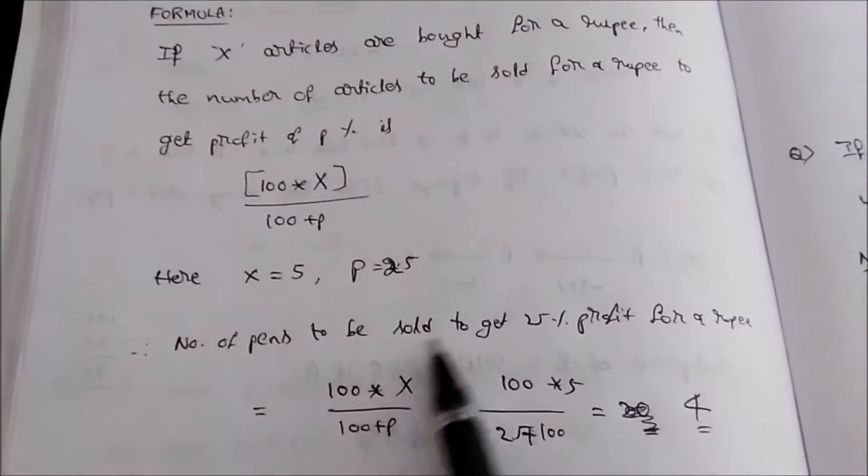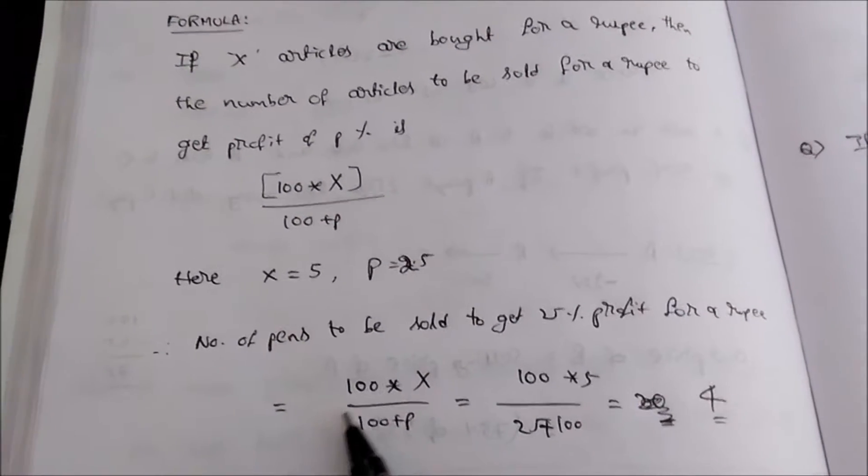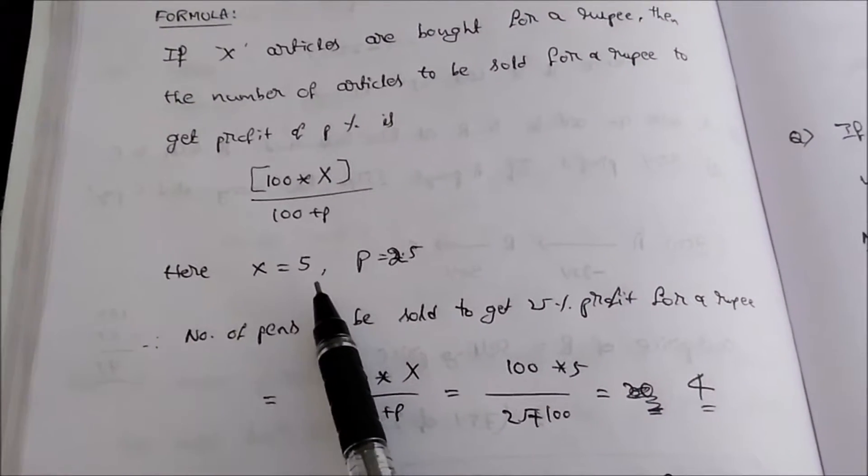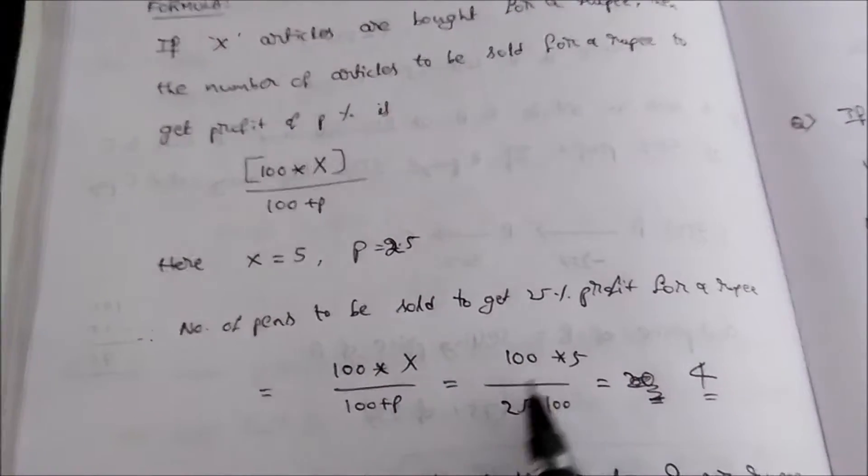So number of pens to be sold to get 25% profit per rupee is equal to 100 times X divided by 100 plus P, that is 100 times 5, X value is 5, divided by 100 plus P value is 25.